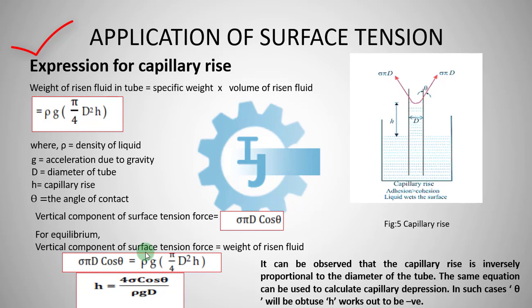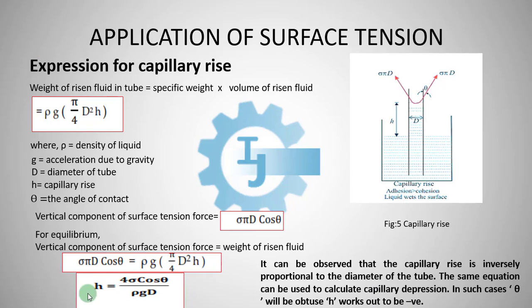Here we take the capillary rise of water. It can be observed that capillary rise is inversely proportional to the diameter of the tube, because h is inversely proportional to d. The same equation can be used to calculate capillary depression for mercury. In such cases, theta will be obtuse and h should be negative, because there will be capillary fall. The expression will be the same, only with a negative sign: h = −4σ cos θ / (ρgd).